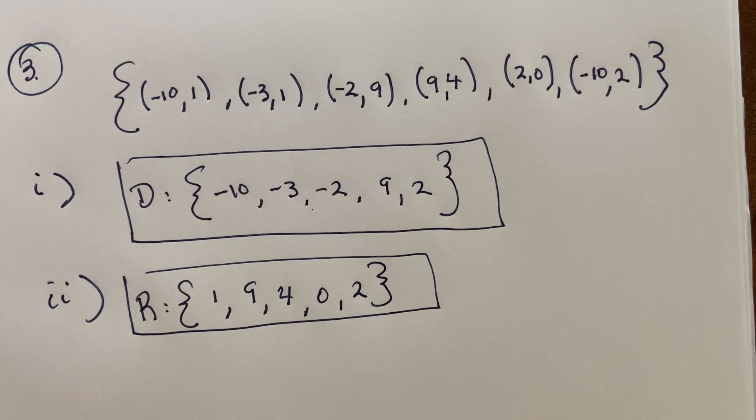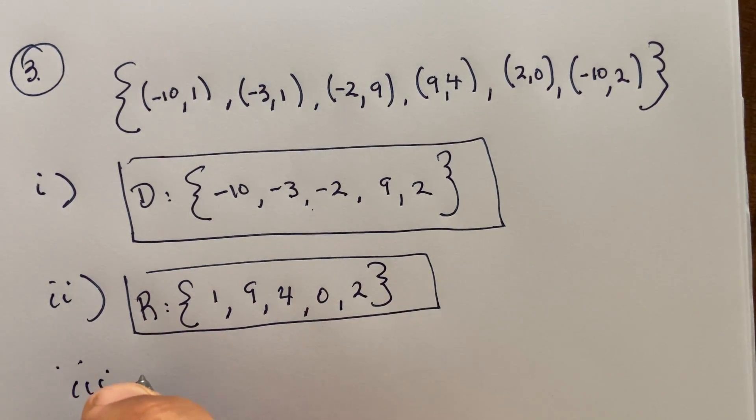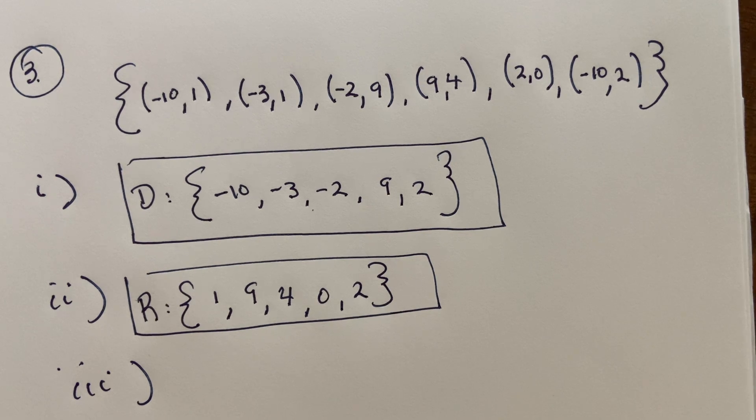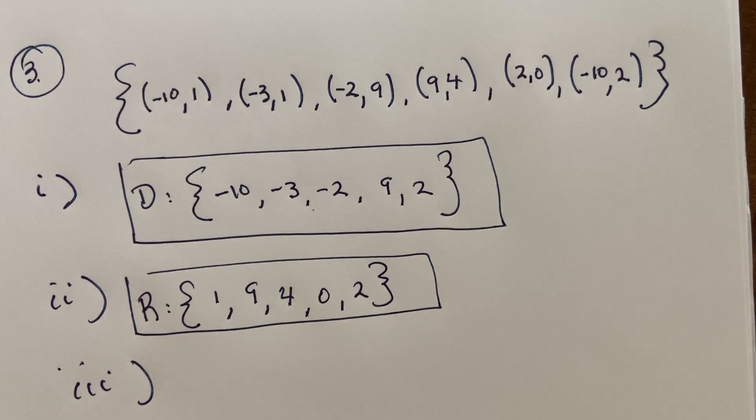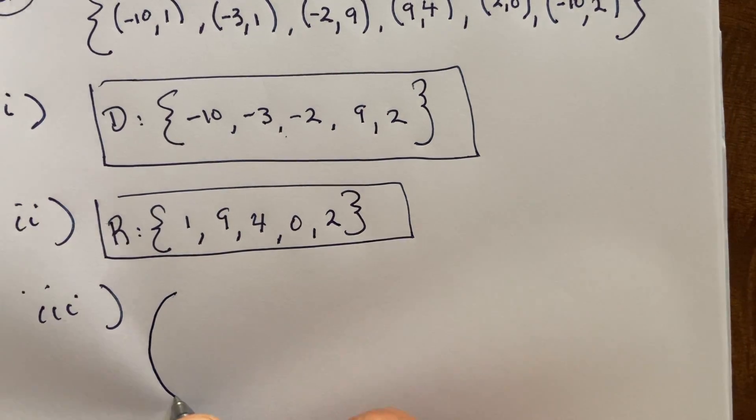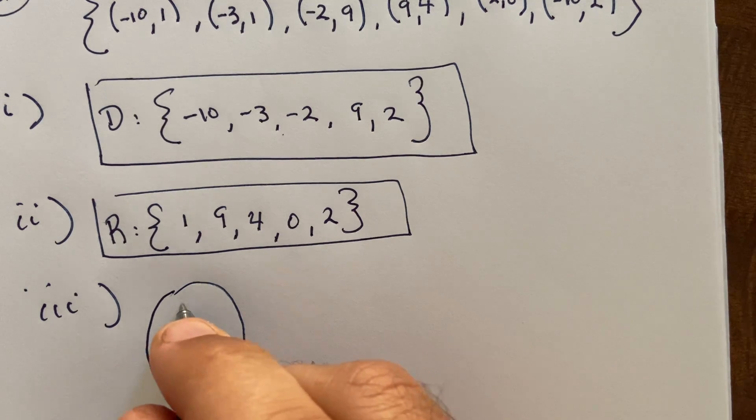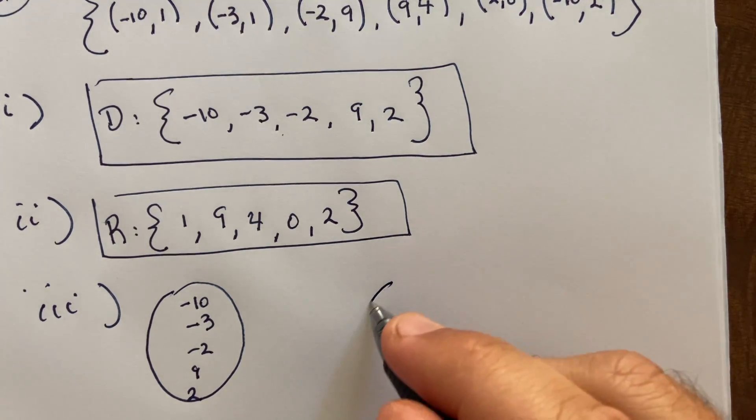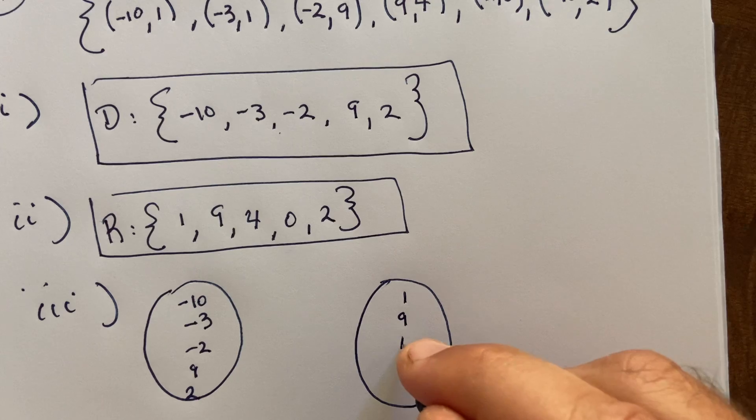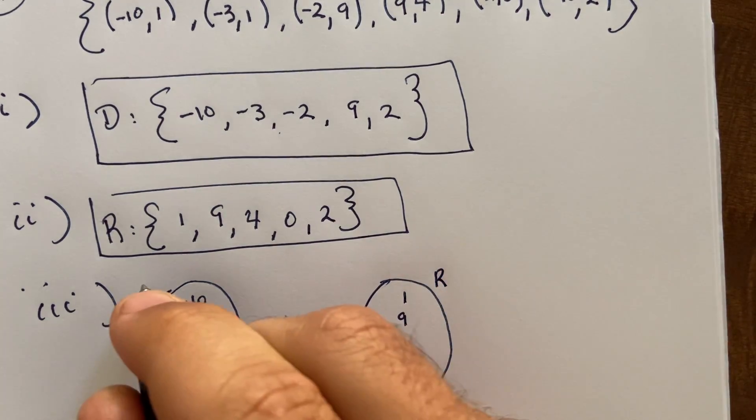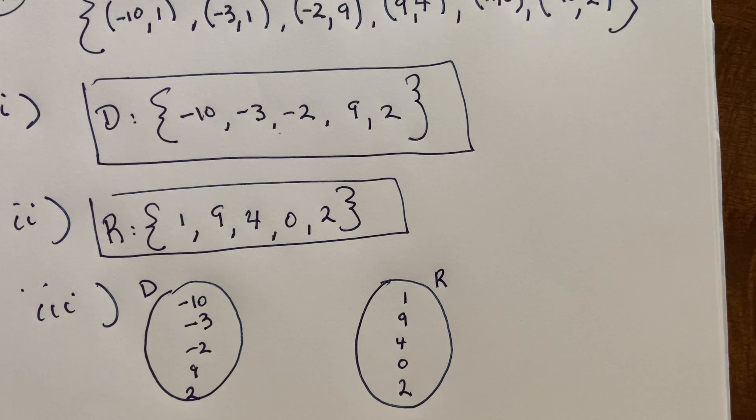And then part three is, is this relation a function and why or why not? So we would need that each input, each member in the first component, corresponds to exactly one member of the range. One way that we've done this is through these diagrams, so if I write the domain over here and then I'll go ahead and write the domain over here.